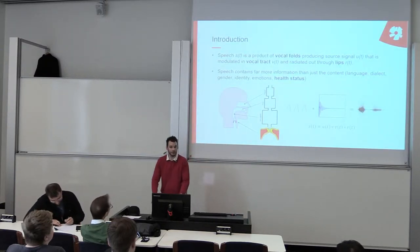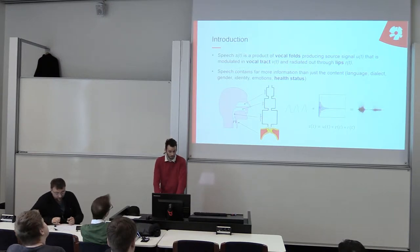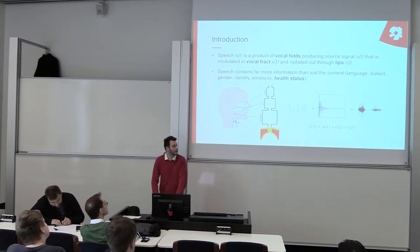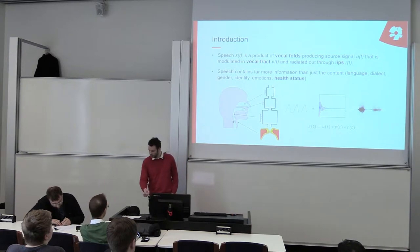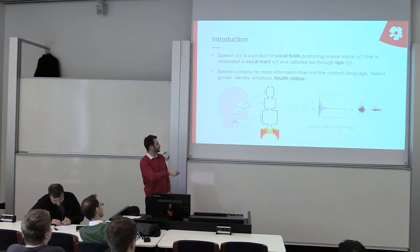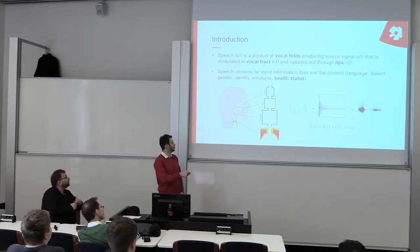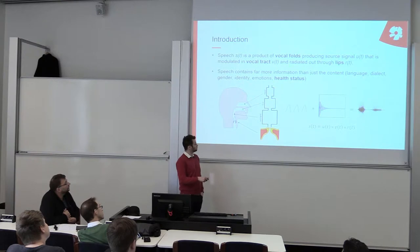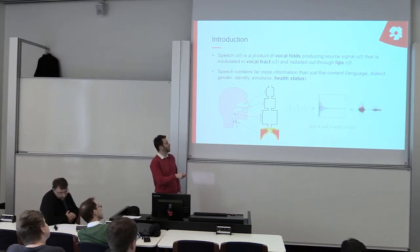As we all know, speech is the most common way of communication between us humans, and with the advent of speech recognition technologies it is slowly becoming more popular for communicating with machines. The whole speech signal can be produced or interpreted as a model consisting of two parts: the voice source and the vocal tract. The voice source consists of our vocal cords which open and close periodically, producing a signal that is then frequency modulated in the vocal tract, which acts as a series of resonators, and is then radiated out through the lips — and that is our speech.